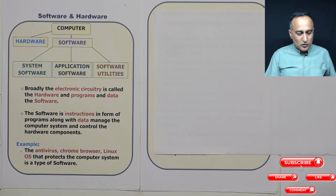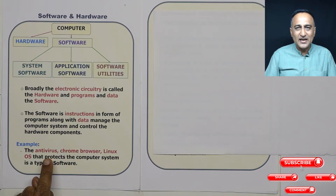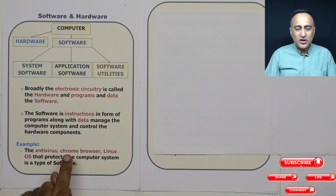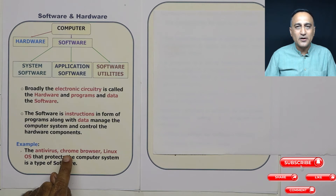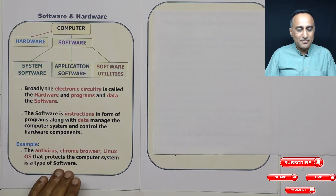Examples of software could be your antivirus software like Norton Antivirus, the Avira Antivirus, the Kaspersky Antivirus, your Google Chrome browser, Internet Explorer, the Firefox browser, your Windows operating system, your Linux operating system — these are all examples of software.